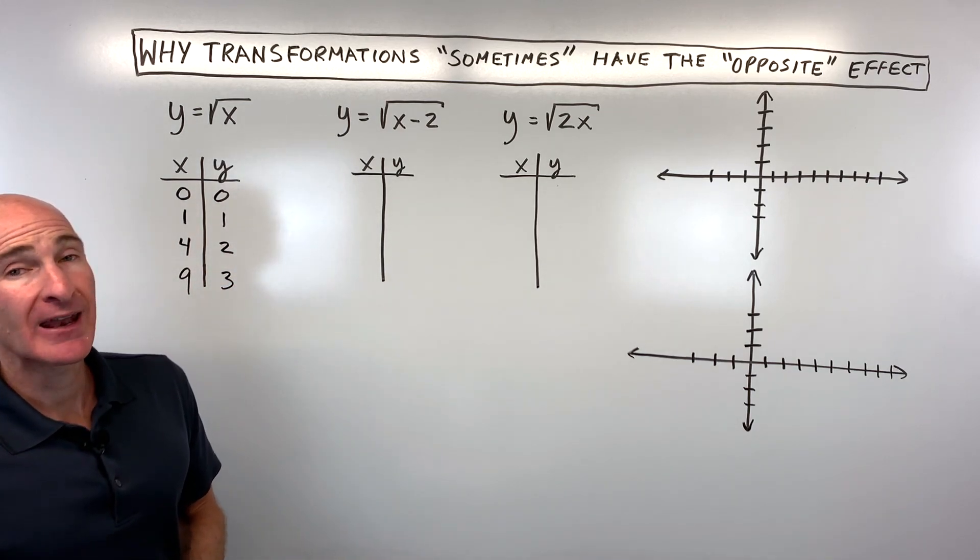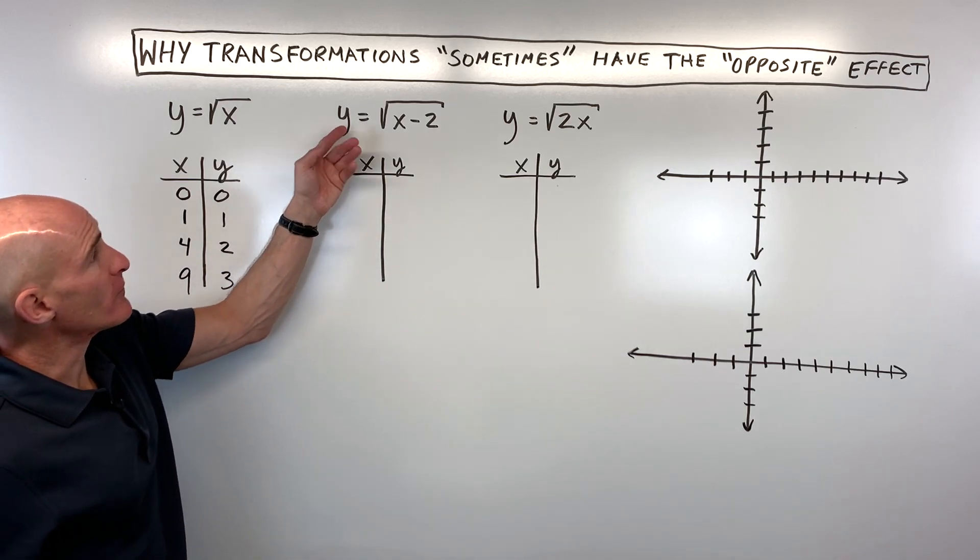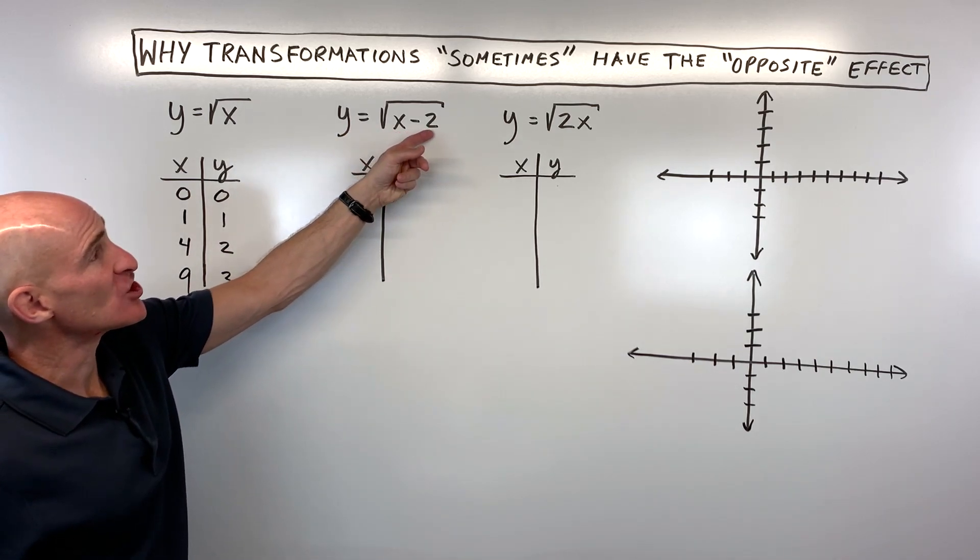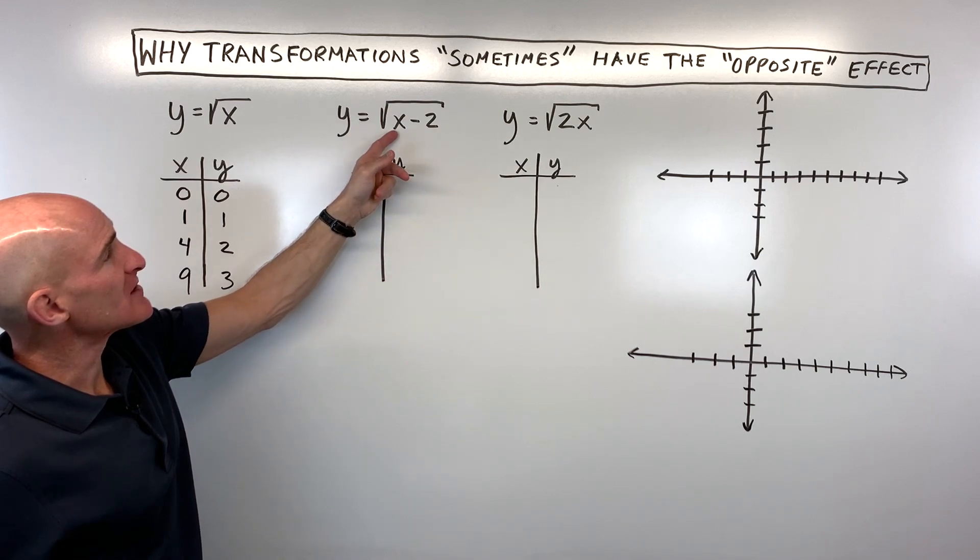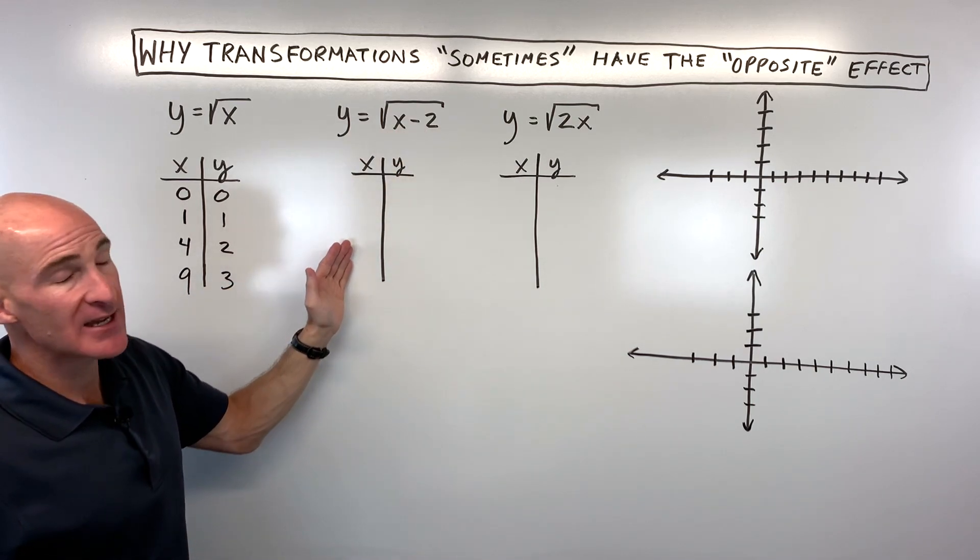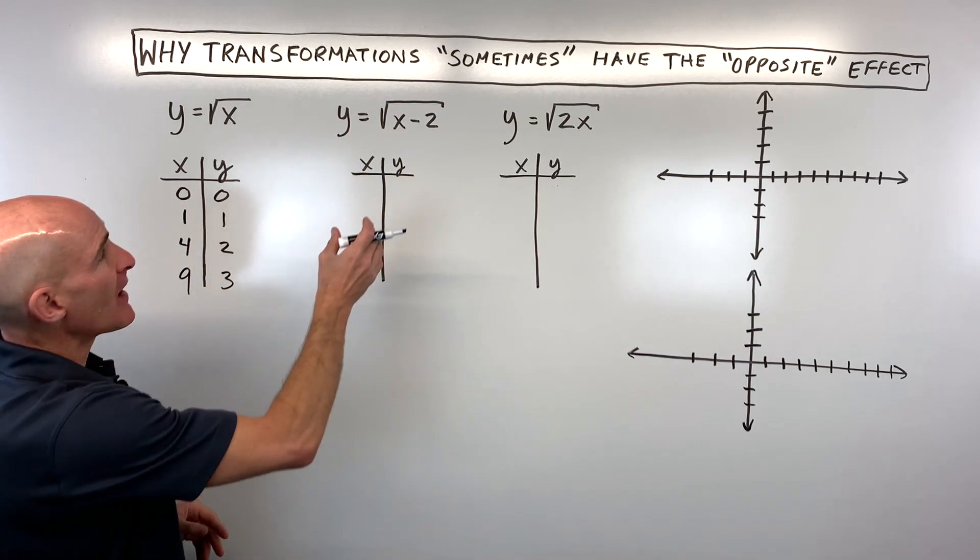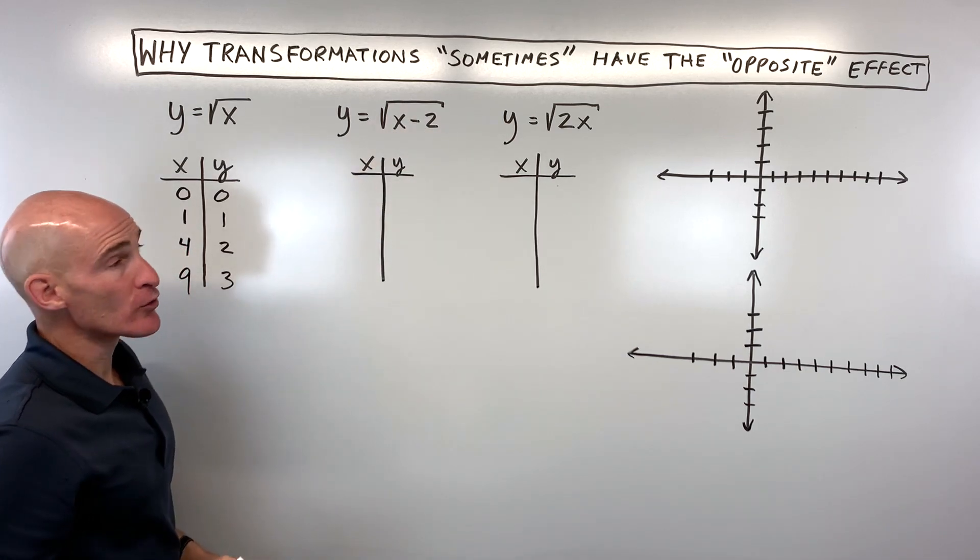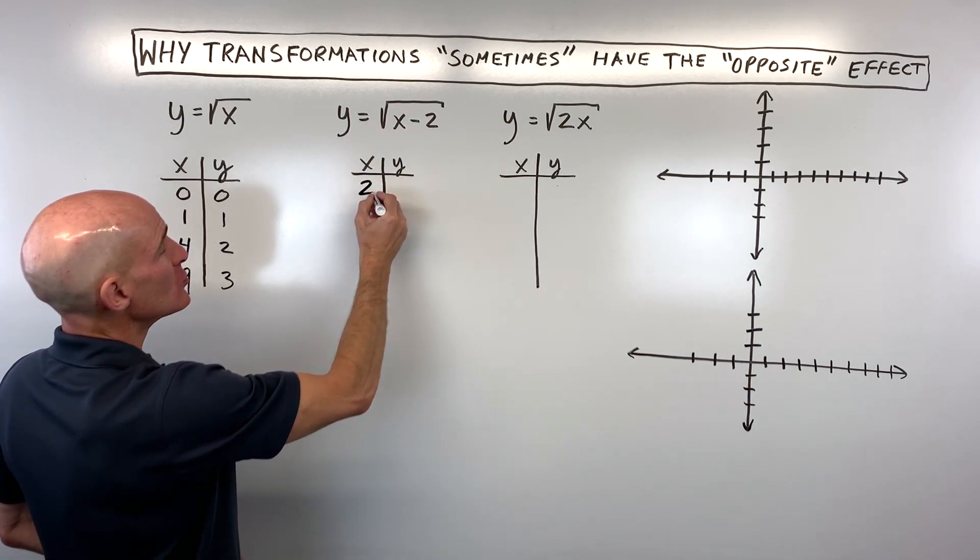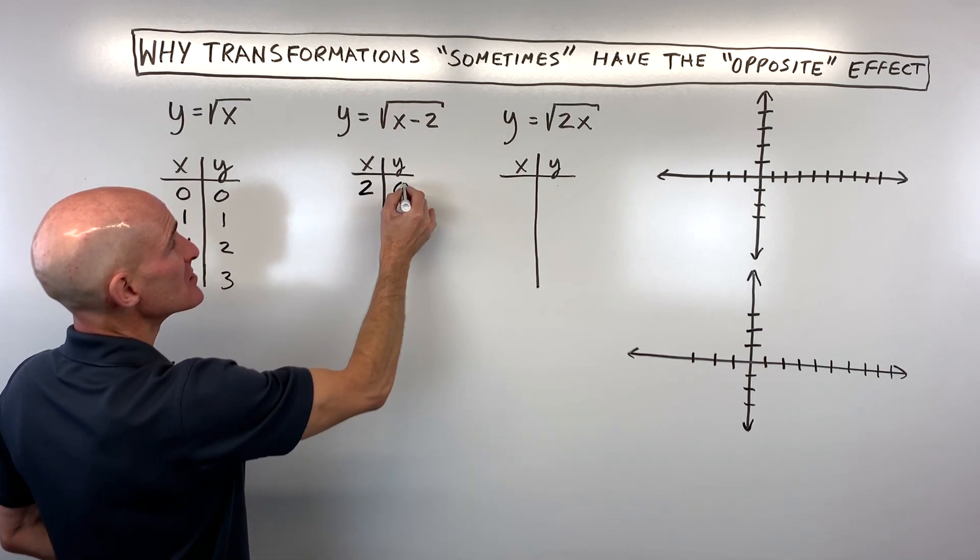Now let's look at a function that has been transformed—a square root function that has been shifted. When we look at this x - 2, let's make a table. Let's pick values that make it easy to take the square root of. For example, I could put in 2: 2 - 2 is 0, and the square root of 0 is 0.